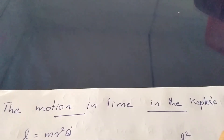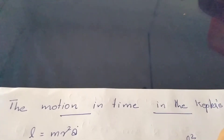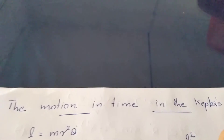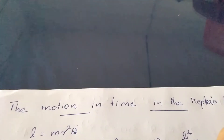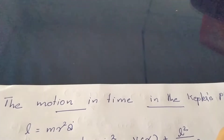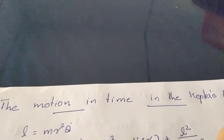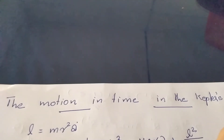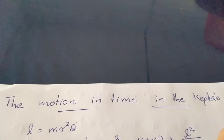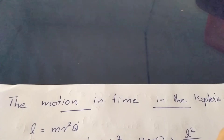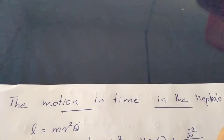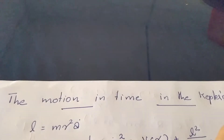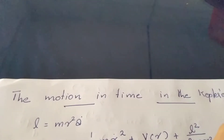Hey all, good morning. We are going to discuss the first level of capitalization. In the second level, we will discuss the third level of the planet. We will say that the planet completes a revolution, which is represented as d2. The square is proportional to the cube of the semi-major axis. We have to prove that.